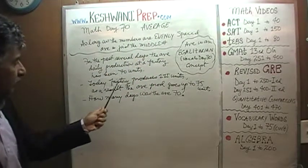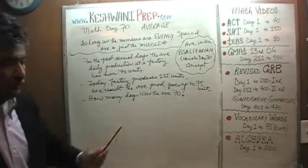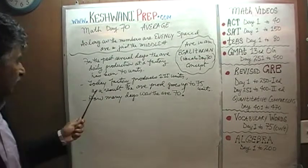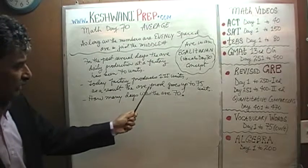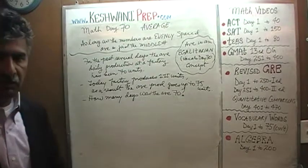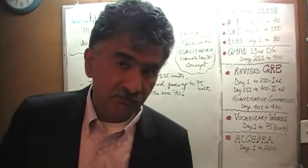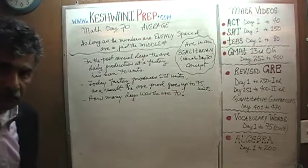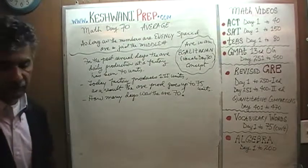Today the factory produces 115 units — far higher than their average production has been in the past. As a result, the average production goes up to 75 units. The average production has shot up to 75 units because of the fact that today we produced 115 units. The question is very simple and straightforward: how many days was the average 70?